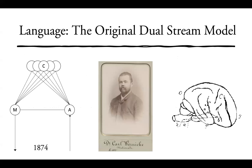The main point is that language was the original dual stream model. Way back in 1874, Carl Wernicke proposed his famous model explaining the organization of aphasia, depicted here in a classical house model. Wernicke drew this picture, and described a model which Lichtheim then drew in a form that looks similar to this.